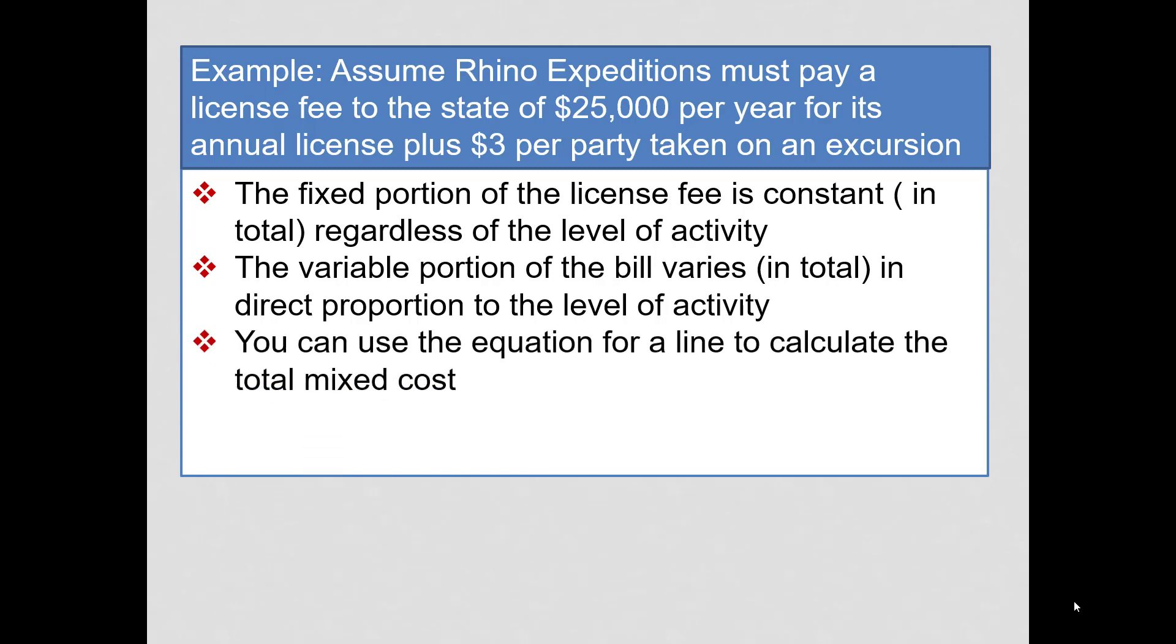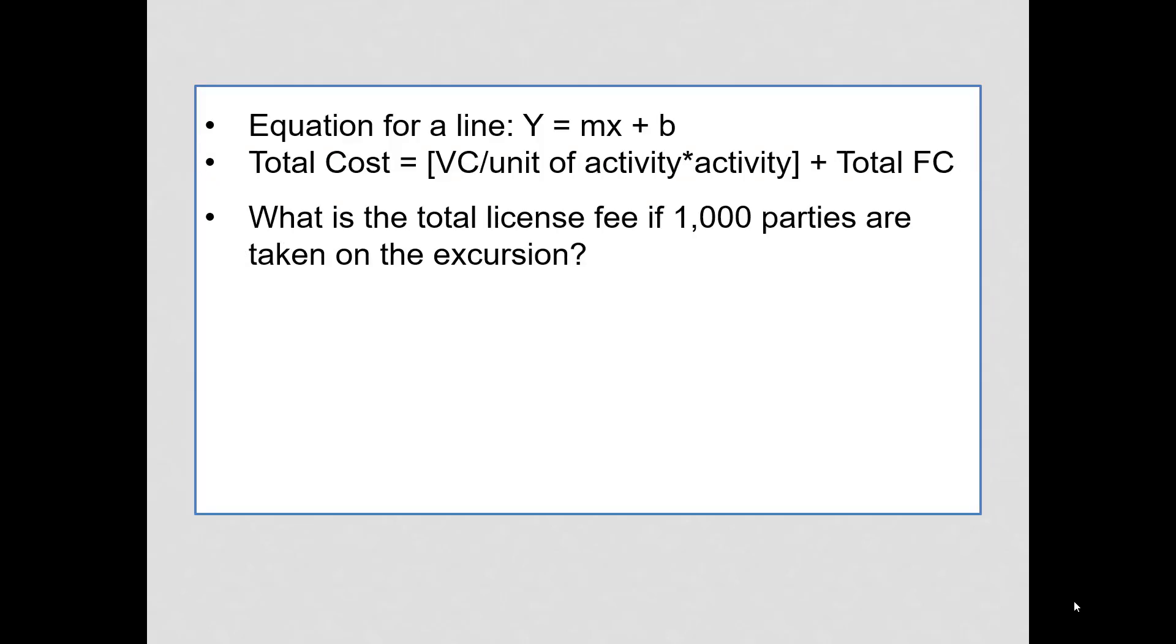We will be able to use the equation for a line to calculate the total mixed cost. An equation for a line is y equals mx plus b. And if we put that in terms of the total cost, variable cost per unit of activity times activity, that will be our total variable cost. And we add our total fixed cost to get our total cost.